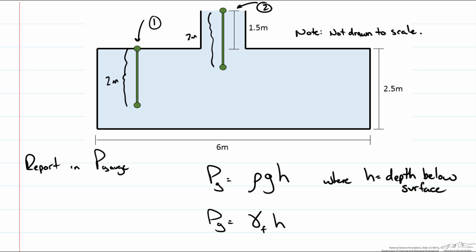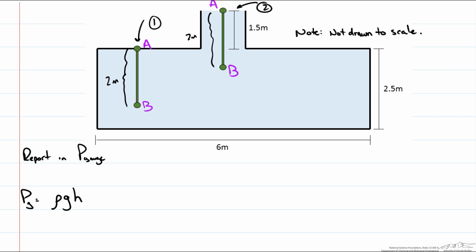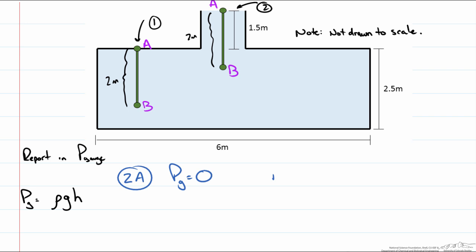As you would expect, the deeper we go in the fluid the higher the pressure. Let us take a look at our two measurement devices 1 and 2. We are going to label the top as A and the bottom as B. If we look at 2A, the pressure measurement being taken at the top of the surface of the water, we know that at the top of the surface we just have atmospheric pressure. So our absolute pressure is just atmospheric pressure and therefore our gauge pressure is 0. We also know this because if we use the calculation our depth is 0. Working in kilopascals, we report P_G as 0 kilopascals for 2A.